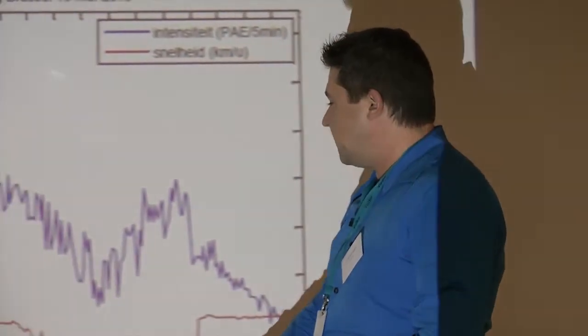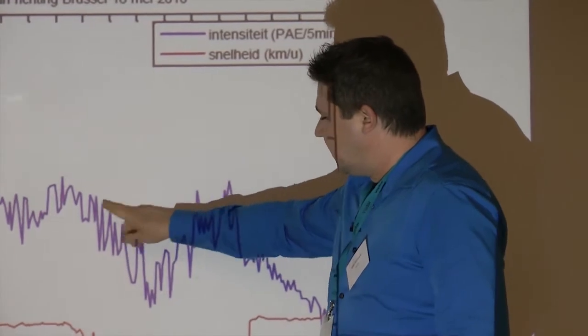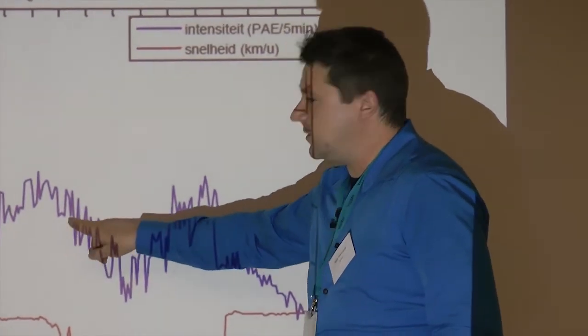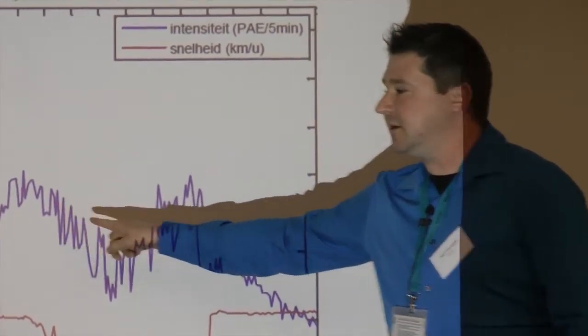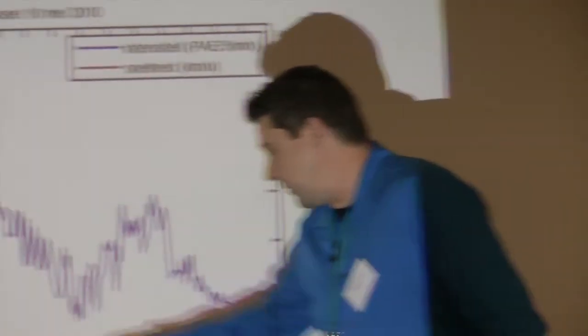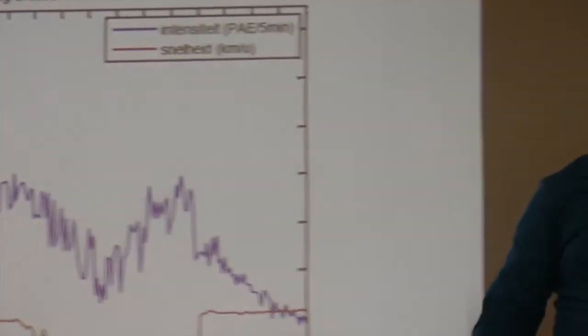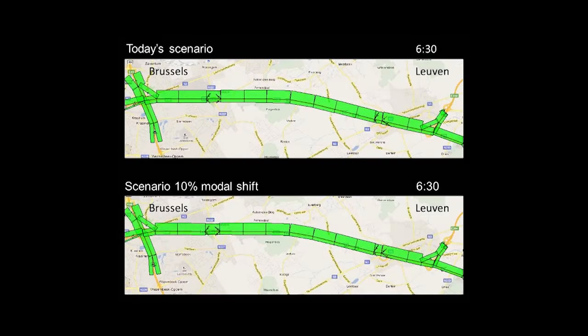What you see in the afternoon is not a traffic jam. There was at this point an accident, and the average speed is going down as well. This is the actual situation as we still have it today.